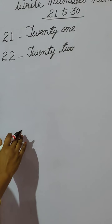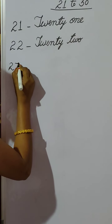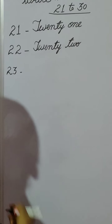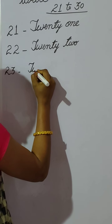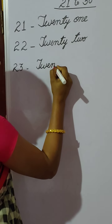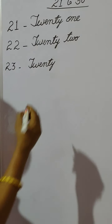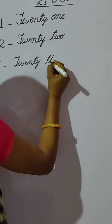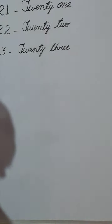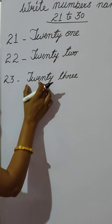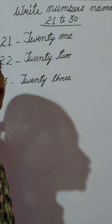After 22, what we have to write? 23. First, we write the spelling of 20: T, W, E, N, T, Y — 20. Then 3. Spelling of 3 is T, H, R, E, E. So 23 is TWENTY — T, W, E, N, T, Y — then THREE — T, H, R, E, E — 3. TWENTY-THREE. 23.